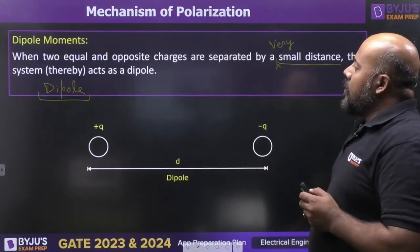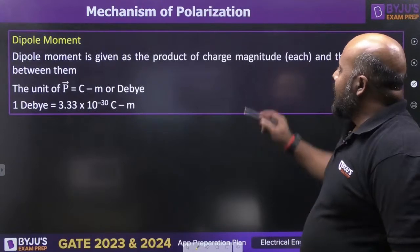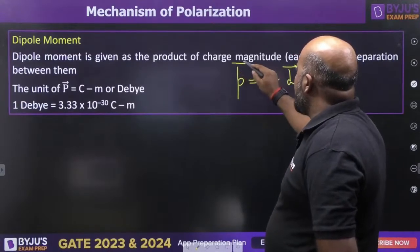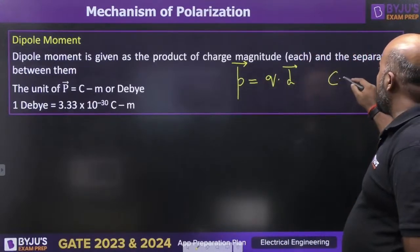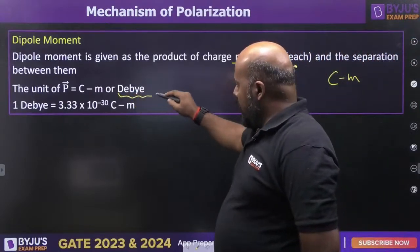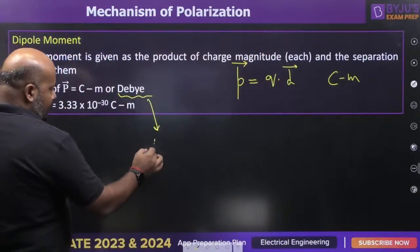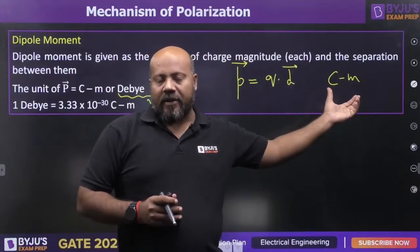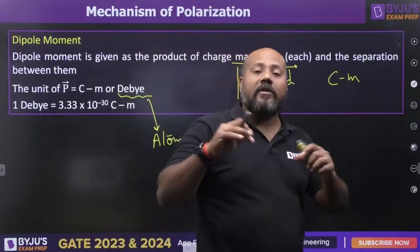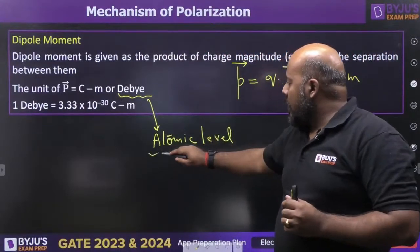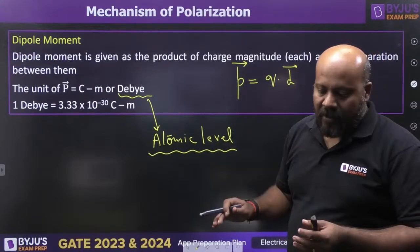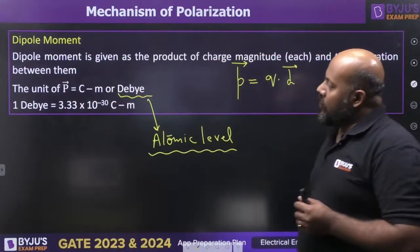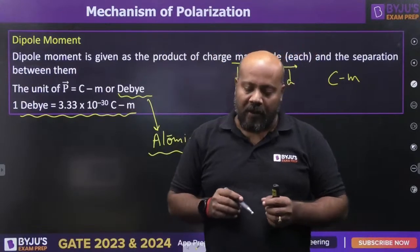Dipole moment is the product of the individual charge and the separation between them. It is a vector quantity with unit coulombs·meter (C·m). At the atomic level, the unit Debye is used: 1 Debye = 3.33 × 10⁻³⁰ C·m, because one coulomb is an extremely large quantity of charge at the atomic scale.